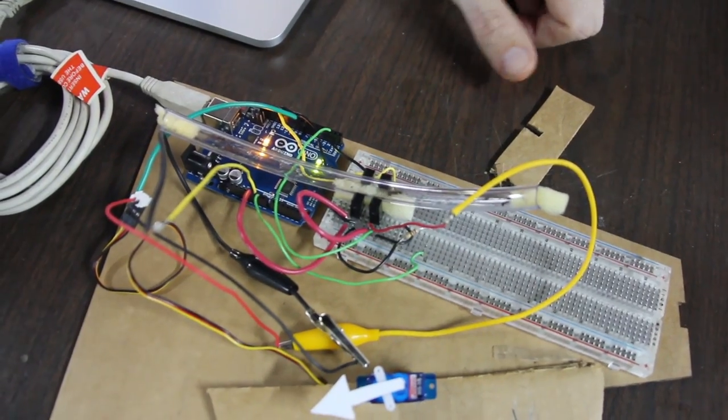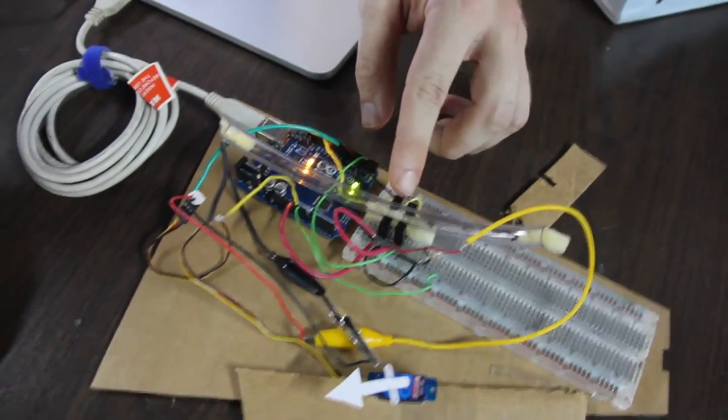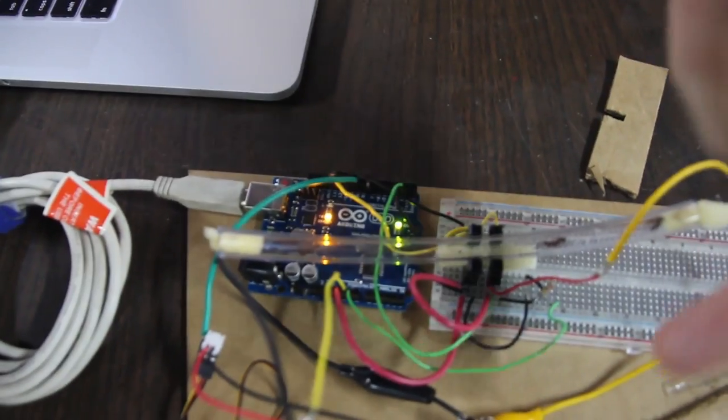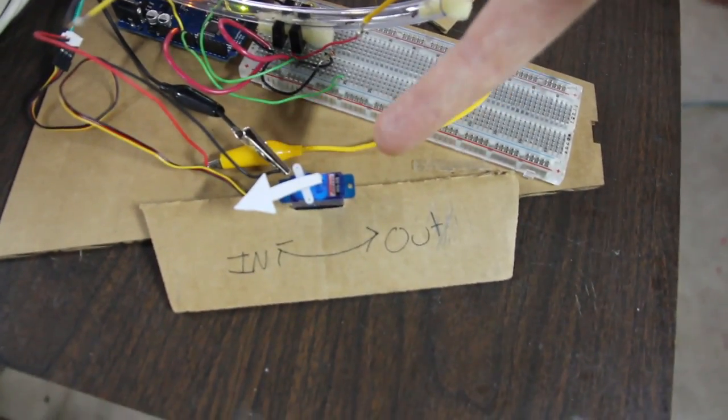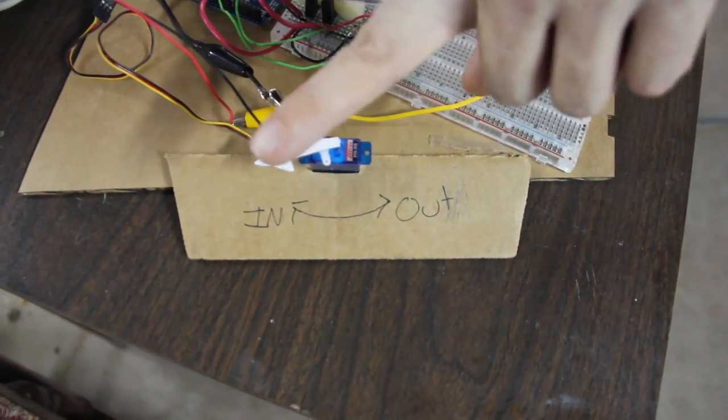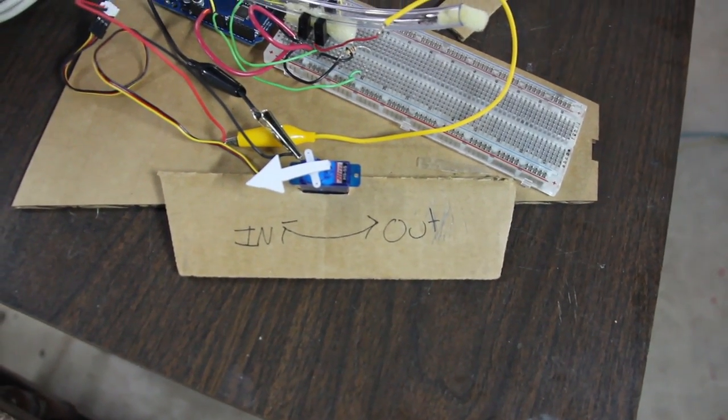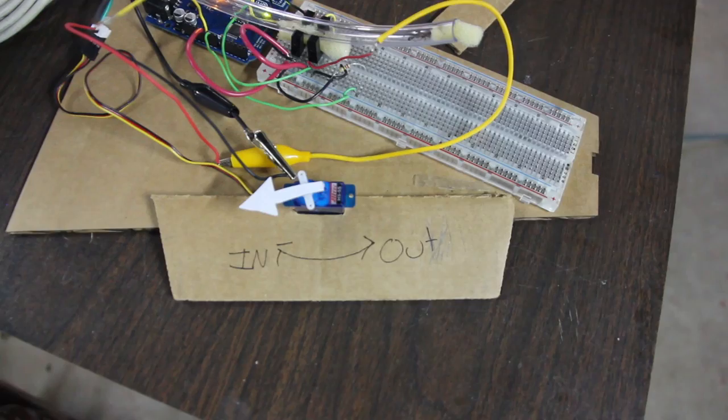The Arduino decides which detector got tripped first and can infer direction from that. Then this gets sent to the servo which is slowly counting the amount of ants that have gone in or out. So right now a lot more ants have gone in than out.